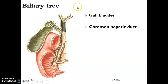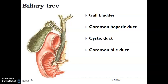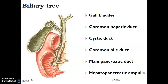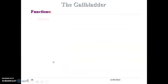The right and left lobes of the liver have ducts that fuse. You have the right hepatic duct and left hepatic duct, which fuse to form the common hepatic duct. The common hepatic duct is joined by the cystic duct from the gallbladder to form the common bile duct. This common bile duct is then joined by the main pancreatic duct. At the posterior medial part on the second part of the duodenum, they open at the ampulla of Vater, which is guarded by the sphincter of Oddi — the hepatopancreatic ampulla.